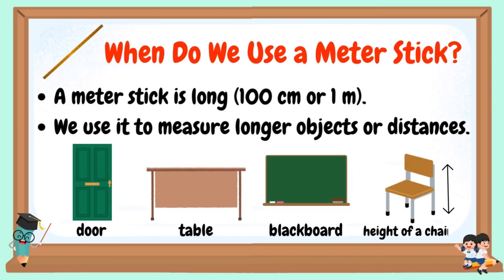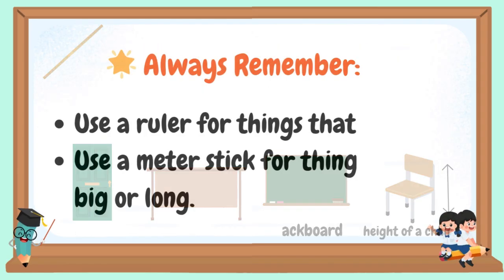When do we use a meter stick? A meter stick is long, 100 centimeters or 1 meter. We use it to measure longer objects or distances like door, table, blackboard, and the height of a chair.